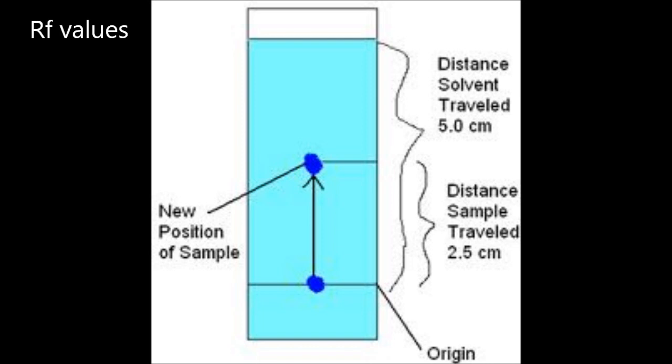Retention factor, or RF values, can be used to identify components of a sample. The distance from the line that the sample was on to the middle of the blob that's produced, divided by the distance from the line to the top of the solvent will give you the RF value for that particular solvent on that particular paper.